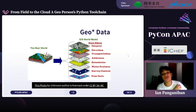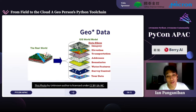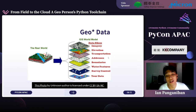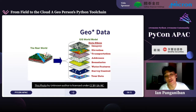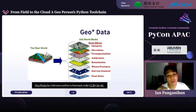When we talk about geo data, we focus on geospatial data, which models the world in different data layers. In the GIS world, you have different data slices — elevation, transportation, addresses, boundaries, water features. Think of it like a pizza: you have your base, crust, sauce, cheese, pepperoni, and pineapple on top if you like. Geo data encompasses all these different layers across this stack.